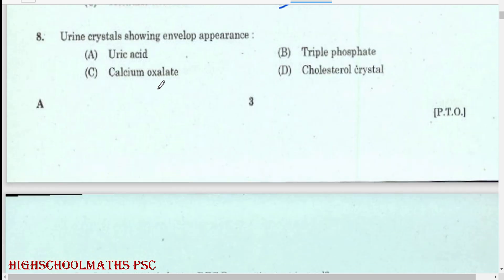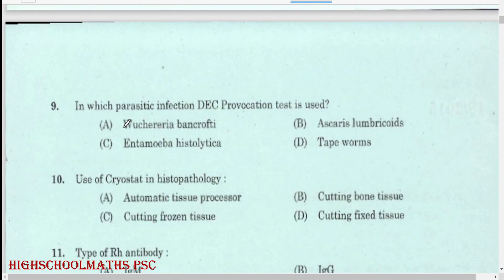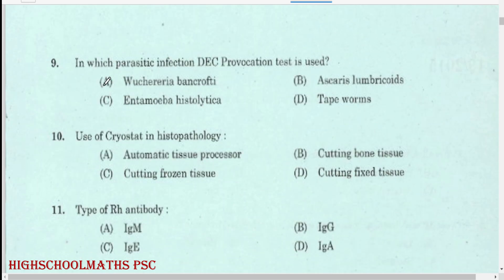Urine crystal showing envelope appearance: Calcium Oxalate. In which parasitic infection is the DEC Provocation Test used? Answer: Wuchereria bancrofti.